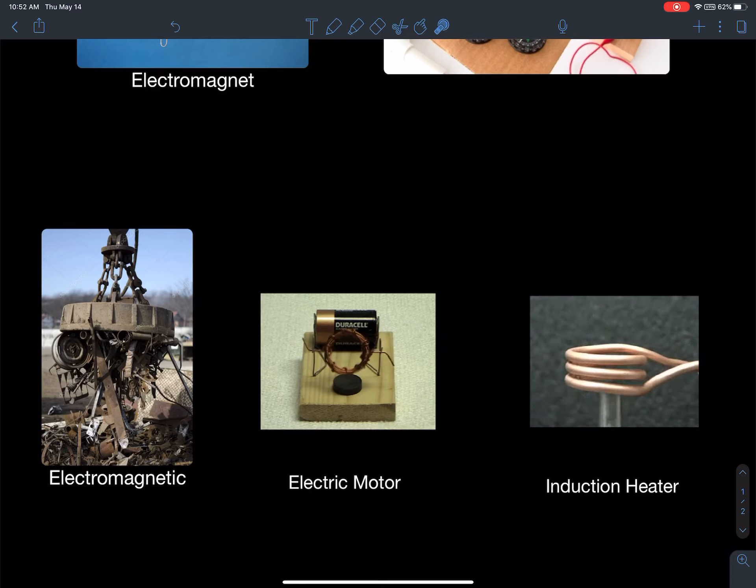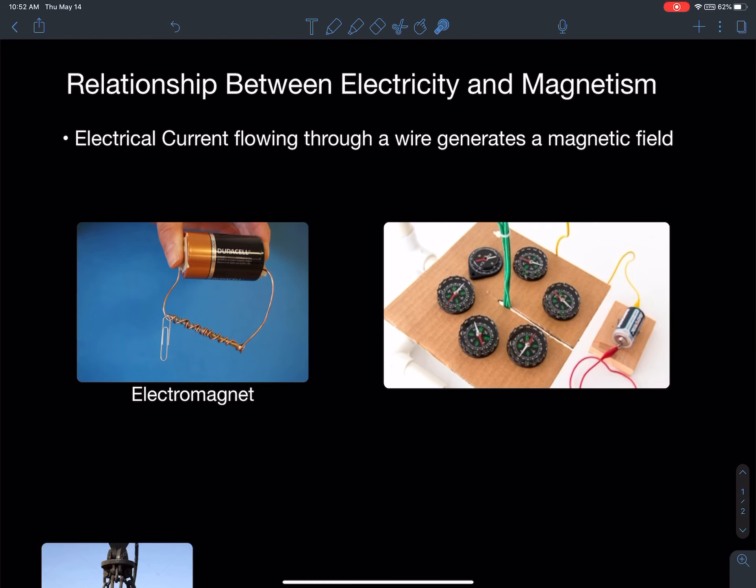So these are just three devices that you might want to talk about in your Criterion D or focus on, if you want to focus on explaining how these electronic inventions have impacted our society. Okay, so that's the relationship between electricity and magnetism. And that's where we're going to cut this unit completely.